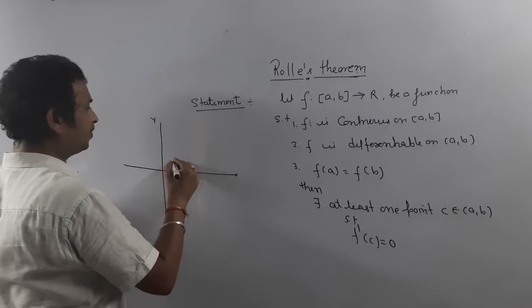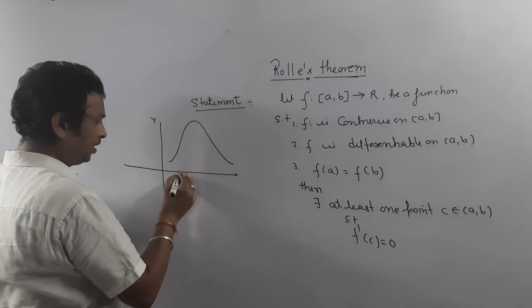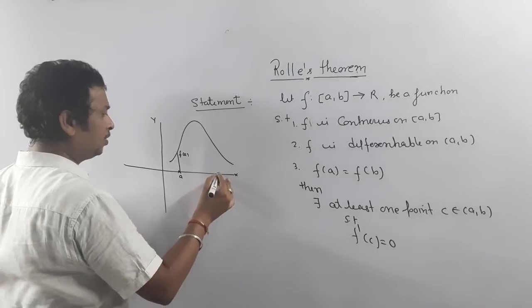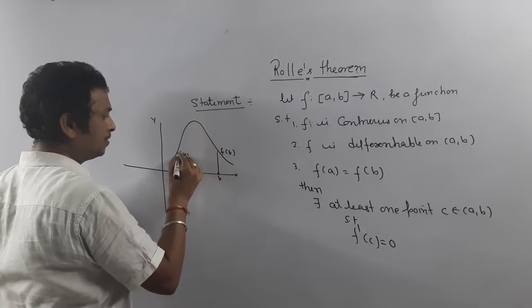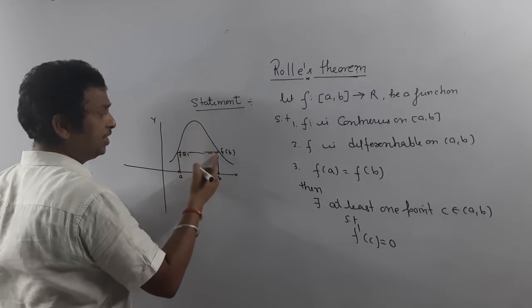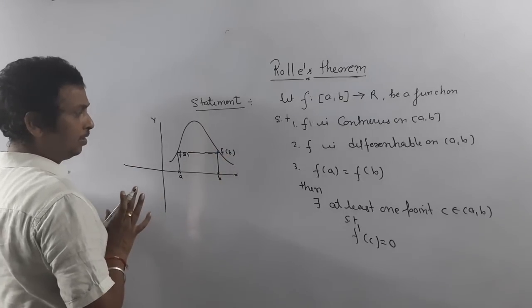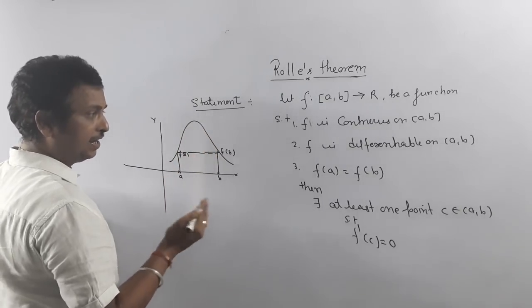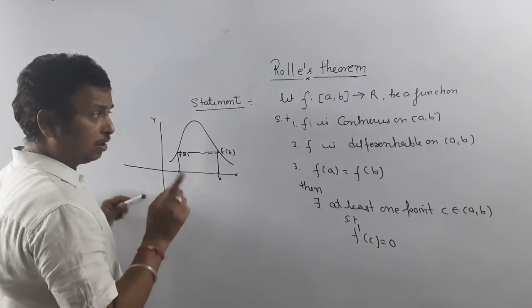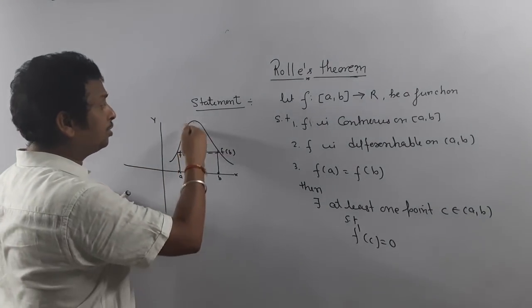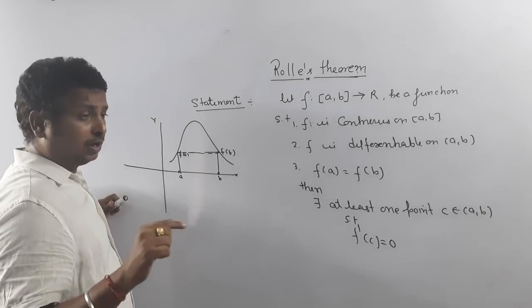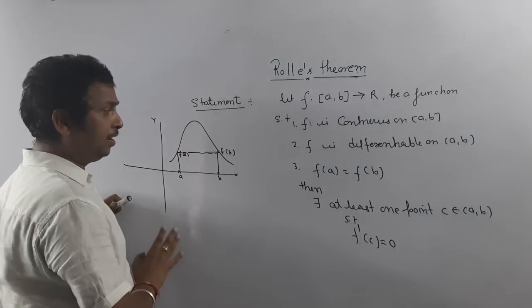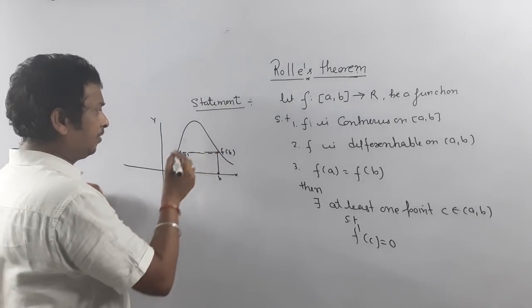Suppose this is the x-axis. Here is the function — this is your point a, and the value of the function at a is f(a). This is your point b, and the value of the function at b is f(b). Since f(a) = f(b), whatever value is there at a, the same value is there at b. The function is continuous because there is no break in the curve between a and b. The function is differentiable because no sharp edge is present — if any sharp edge is there it means the function is not differentiable.